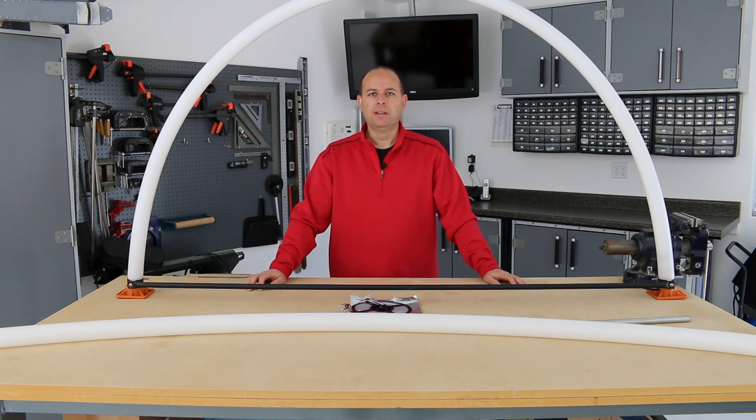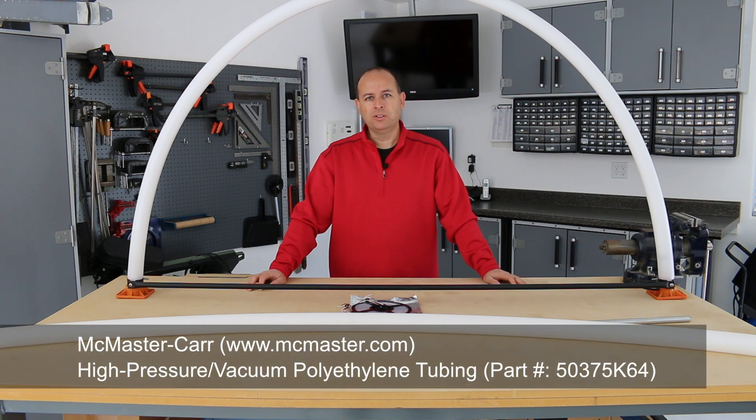There is a tubing available at Home Depot or Lowe's called pex tubing, but this tubing does not have as good of translucent properties as the high-density polyethylene tube which you see here. I used about nine feet of this tube. It's available through McMaster Carr and it's about a dollar fifty a foot.